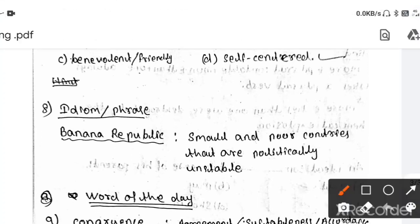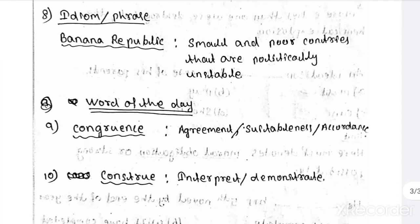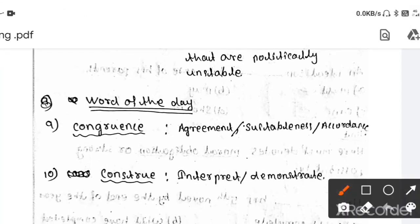Then idiom. What is the meaning of banana republic? Basically banana republic means small and poor countries that are politically unstable. Then next word of the day. Here congruence means what? Actually congruence means agreement or suitableness or accordance.